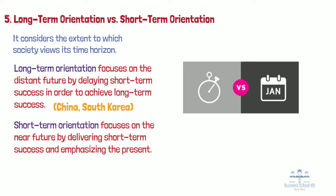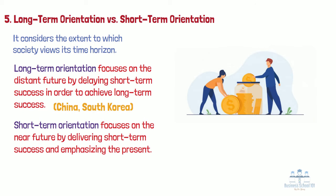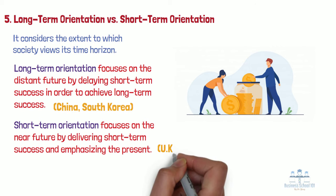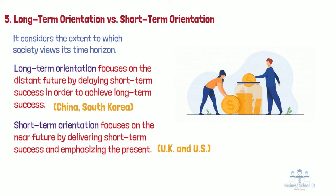The long-term orientation values perseverance, thriftiness, and having a sense of shame. These are evident in traditional Eastern cultures. It's easy to see why a Japanese CEO is likely to apologize or take the blame for a faulty product or process. You can also use this to explain why Asian American families generally have a significantly higher saving rate than American families of other ethnicities. Short-term orientation values tradition only to the extent of fulfilling social obligations or providing gifts and favors, and these cultures are more likely to be focused on the immediate impact of an issue. Not surprisingly, the United Kingdom and the United States rank low on the long-term orientation scale.